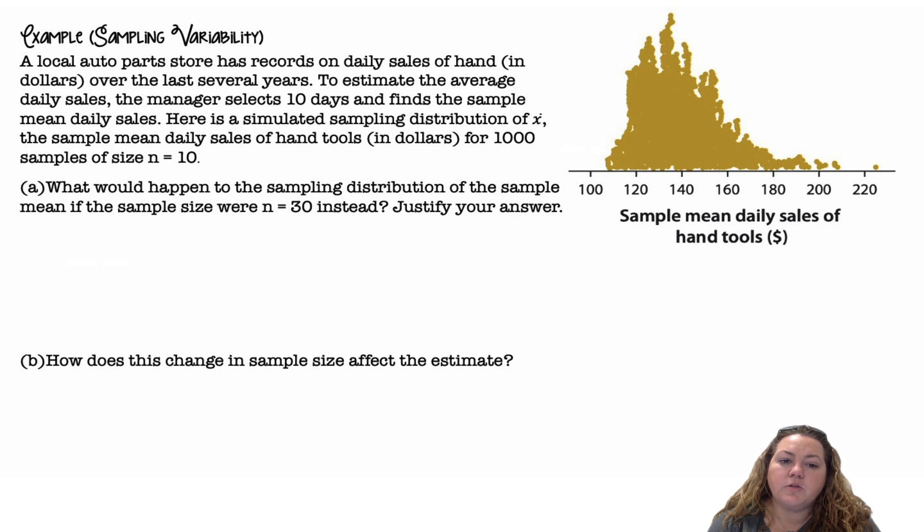A local auto parts store has records on daily sales of hand tools in dollars over the last several years. To estimate the average daily sales, the manager selects 10 days and finds the sample mean daily sales. Here is a simulated sampling distribution of x bar, the sample mean daily sales of hand tools in dollars for 1,000 samples of size n equals 10. So I took a sample of 10 sales and I found the average and then I did that a thousand times.